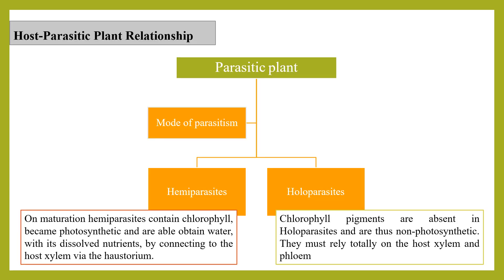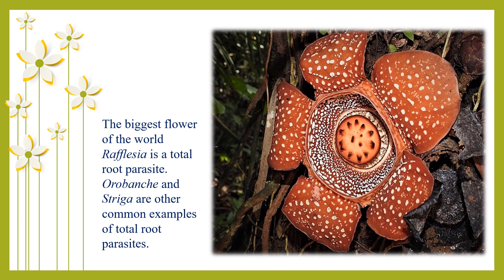Host-parasitic plant relationship. There are two types of parasitic plants: hemiparasite and holoparasite. At maturation, hemiparasites contain chlorophyll, but in holoparasites, chlorophyll pigments are absent. The biggest flower in the world is a total root parasite.